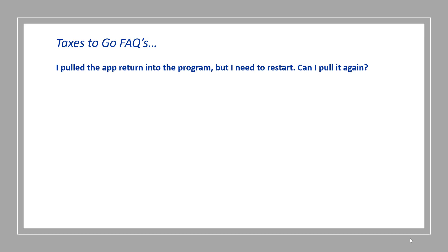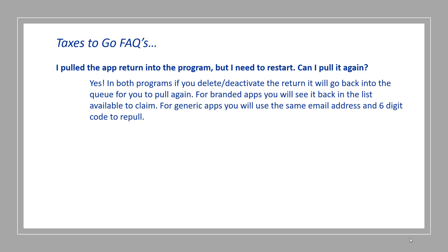I pulled the app return into the program, but I need to restart. Can I pull it again? Yes. In both programs, if you delete or deactivate the return, it will go back into the queue for you to pull again. For branded apps, you'll see it back in the list available to claim. For generic apps, you'll use the same email address and six-digit code to repull.